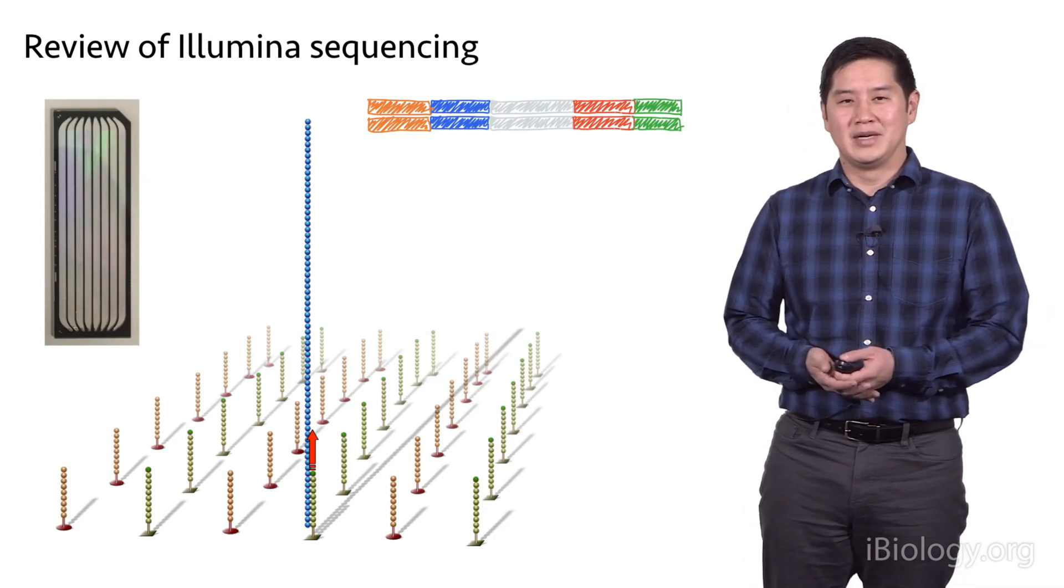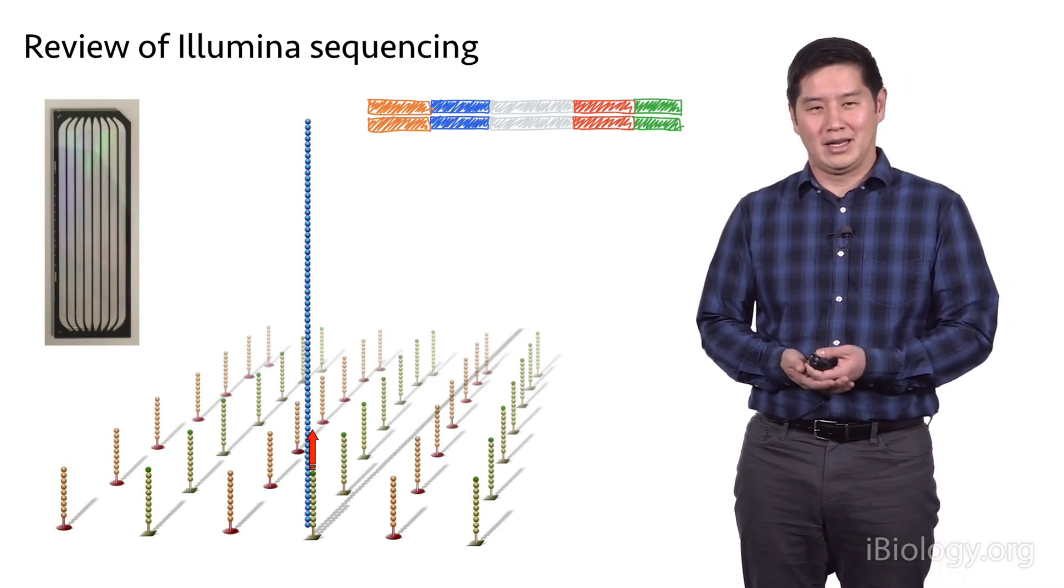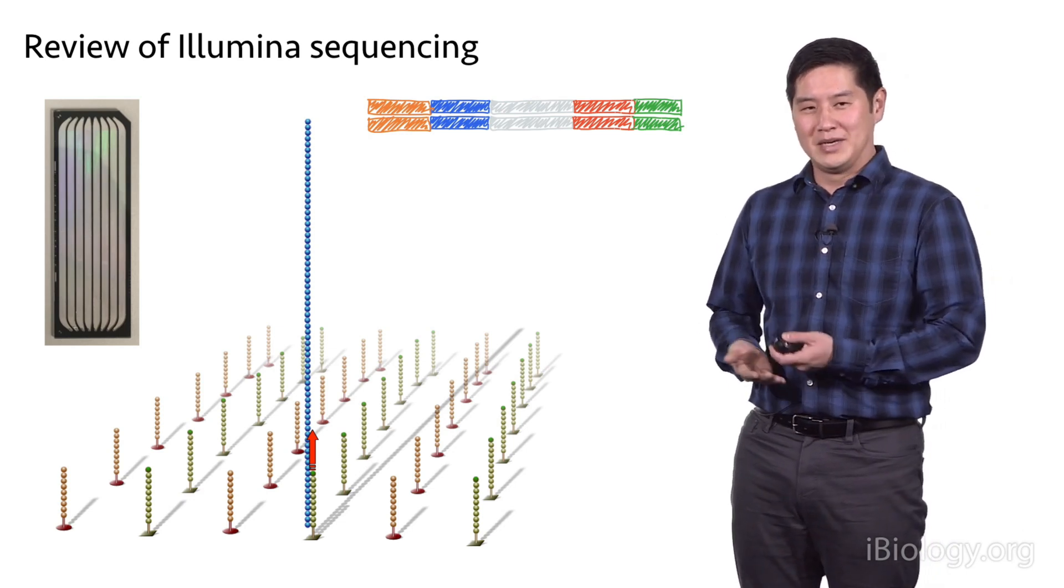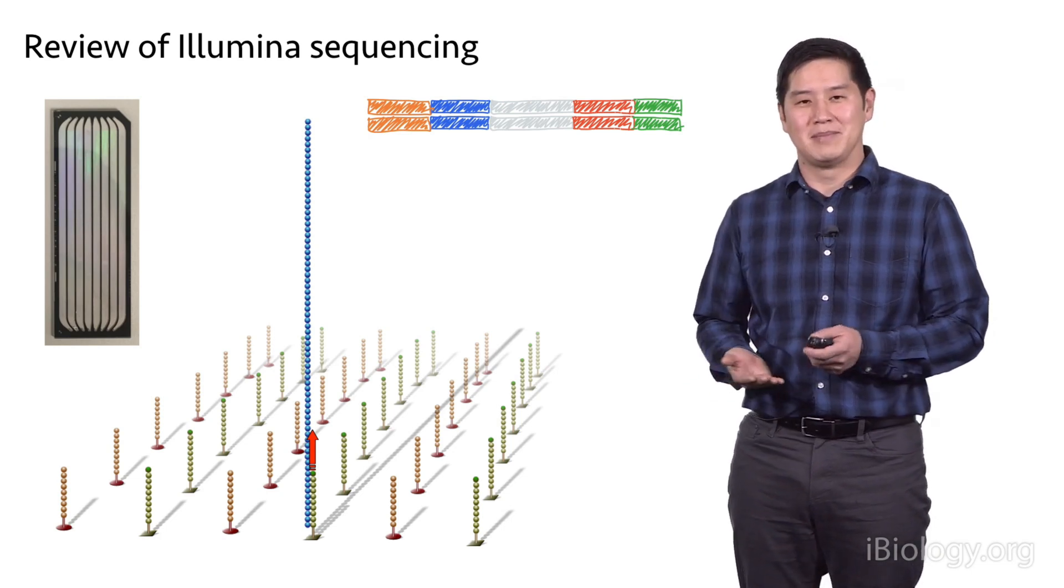First, a brief review of Illumina Sequencing. As a reminder, we have a video of this on the iBiology website that goes into more depth. Illumina Sequencing occurs in these flow cells depicted on the left-hand side, and it's an optical sequencing method.